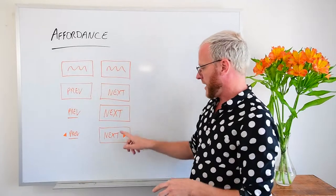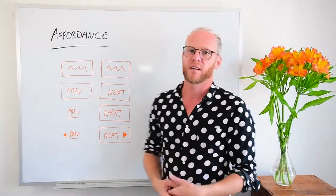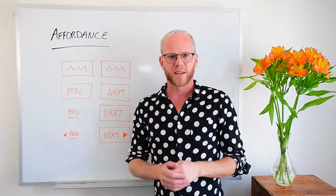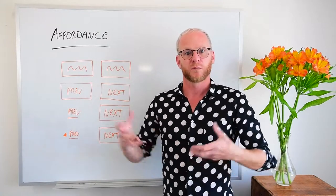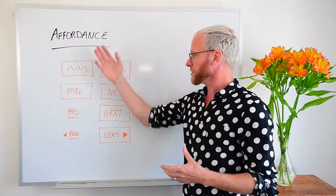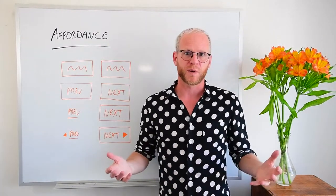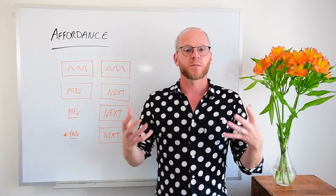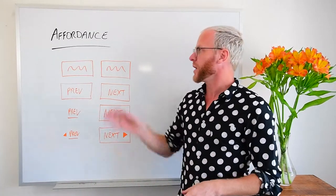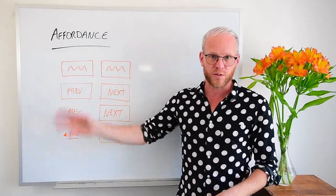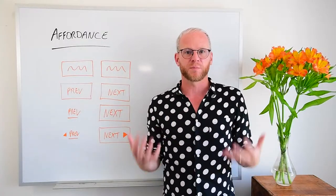But you're applying the principle to move people down your process. Finally, you can add the principle of direction — put some arrows on there to really make it clear that you've got a back and forward movement. And that is how you use affordance to create a better user experience. Now I'm going to jump inside the Unbounce landing page builder to show you how to use affordance in practice.